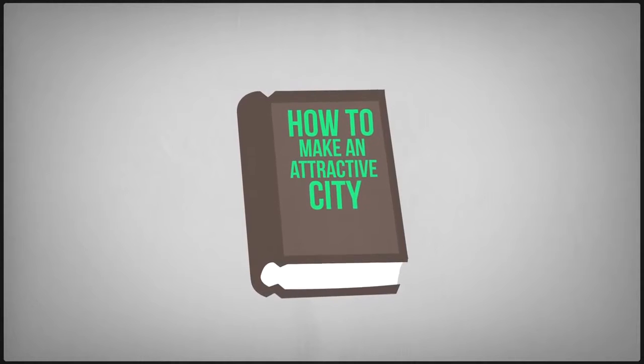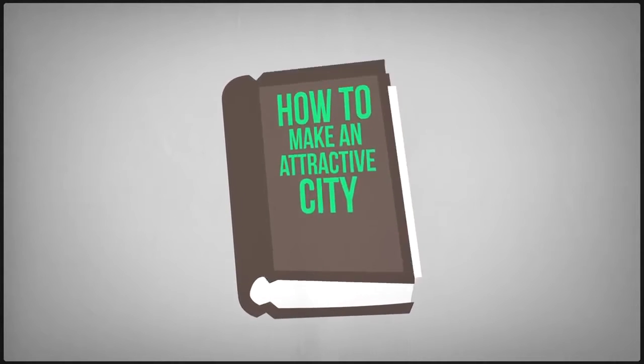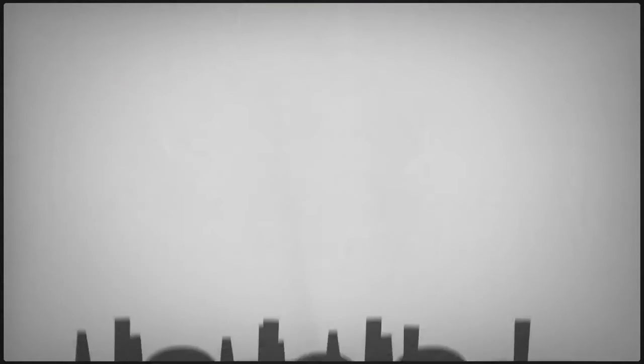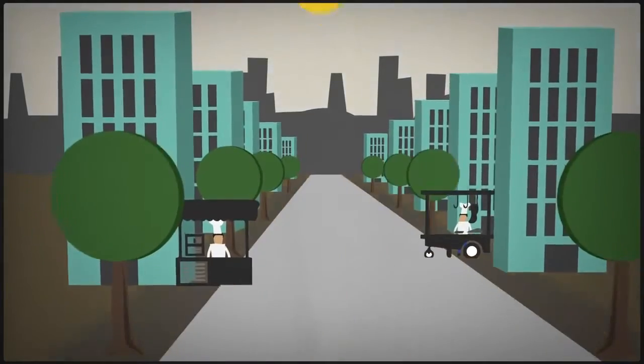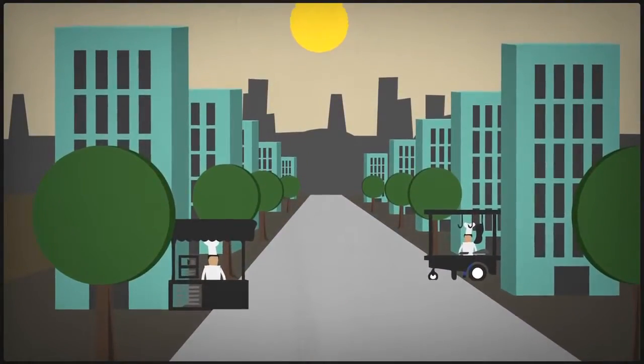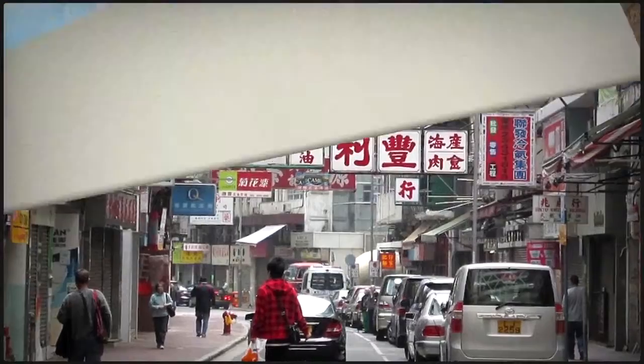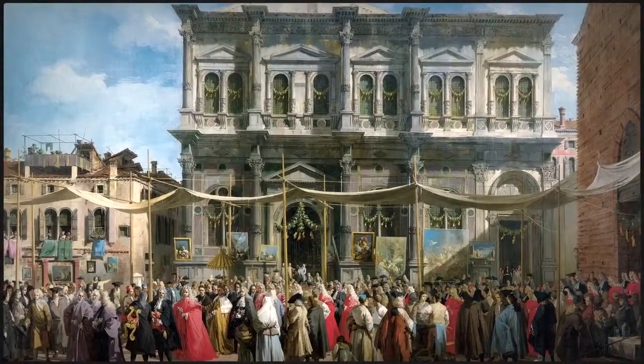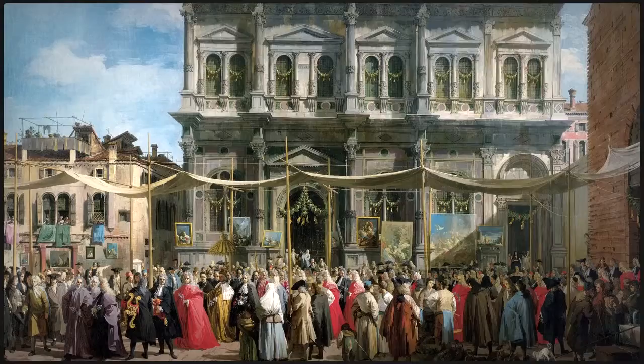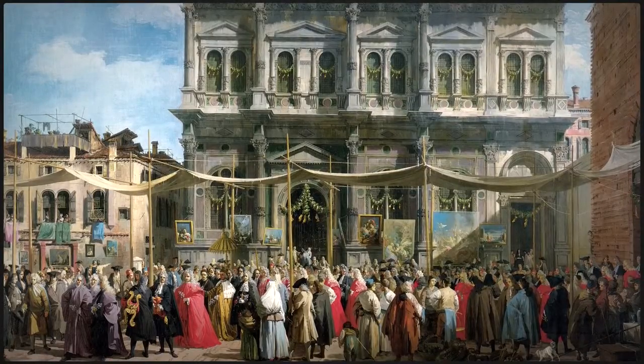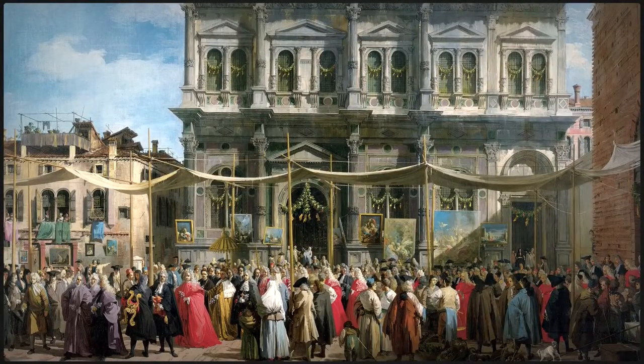Now for the second thing that makes cities beautiful. They have to have visible life. There are streets that are dead and streets that are alive and in general we crave the live ones. This is a live street in Hong Kong. This is a live scene in Venice. In the 18th century the painter Canaletto specialised in pictures of cities everyone loved because they're full of life. There's always plenty going on.